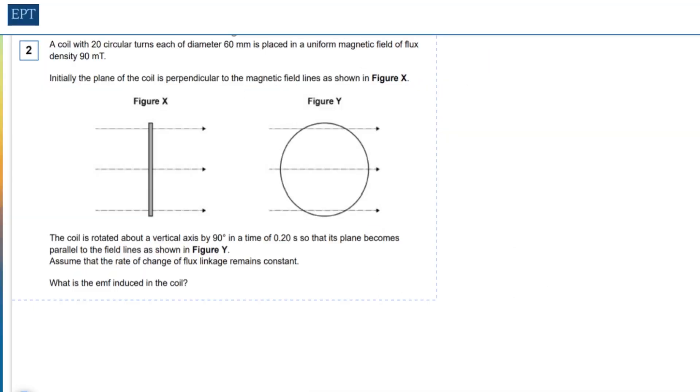In this question, we're asked to find the EMF induced in a coil as it turns from the position in Figure X, where it has maximum flux linked through, to Figure Y, where there is no flux passing through the coil at all.